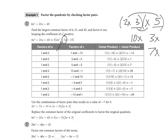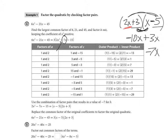Subtracting 10x and 3x does give me 7x, which I need. But I need it to be negative 7, so the 10x term must be negative and the 3x term positive. That means the 3 is positive and the 5 is negative in the binomials. That's the trial and error method — it works easily if you can do the mental math, since the only factors of 2x² are 2x and x.